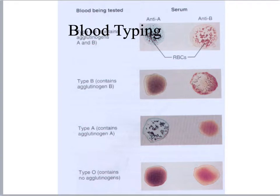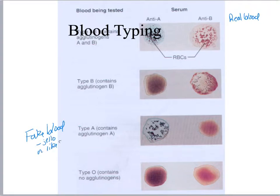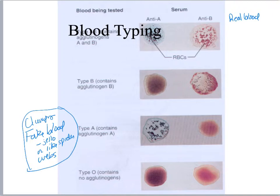Here I want to show you the agglutination pattern, and this is with real blood. If you're in my online class, you're going to be using fake blood, and when it agglutinates it looks a little bit like jello or spider webs — it doesn't look like what real blood looks like. The antibodies grab the antigens and cause those red blood cells to stick together, causing them to clump. The fancy word for that is agglutinate.